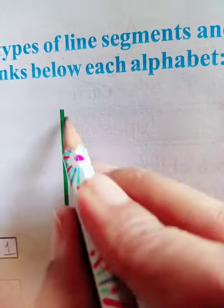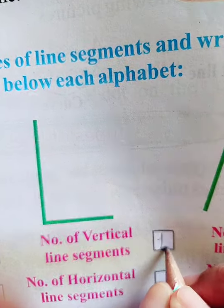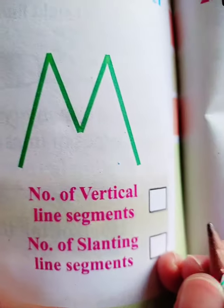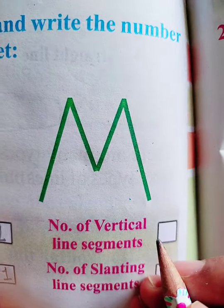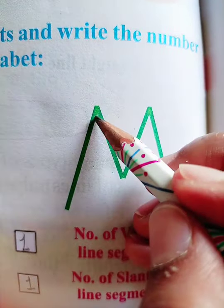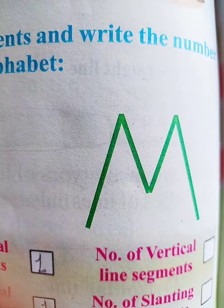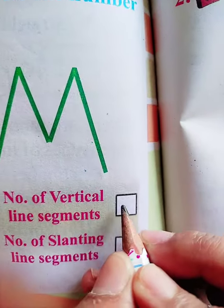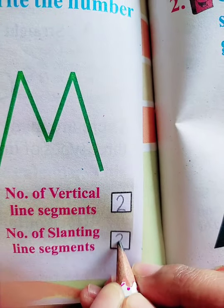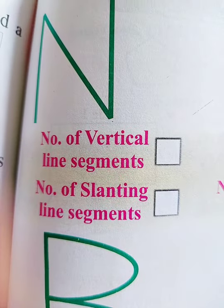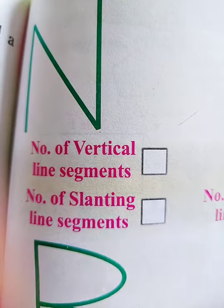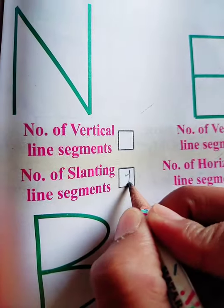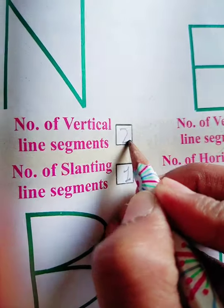Here is L. Vertical line here is one, and horizontal line here is also one. And here is M. In M, how many vertical lines are there? There are two vertical lines and two slanting lines. In the alphabet N, there is one slanting line and two vertical lines.